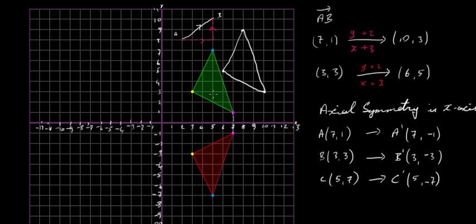We can also do axial symmetry in the y-axis, in which case the image would be over on the other side. You can see that the axis acts like a mirror — we've taken the triangle and just flipped it over.